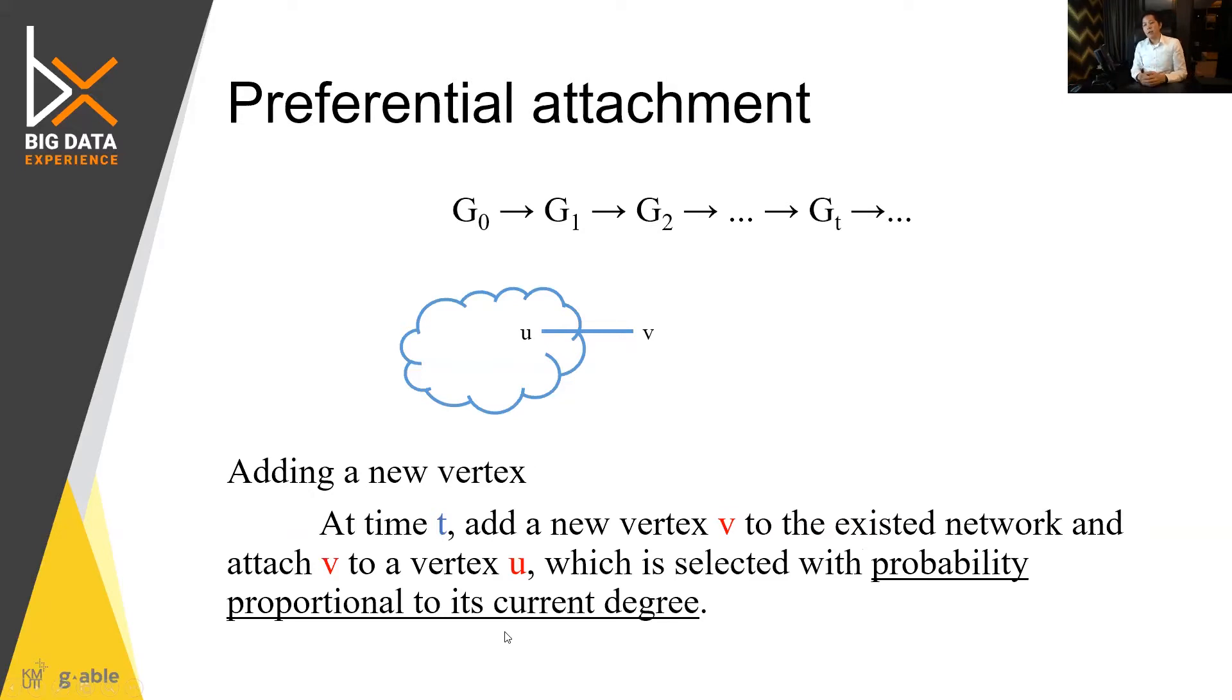And that means we would take the degree as the probability indicator of that node.